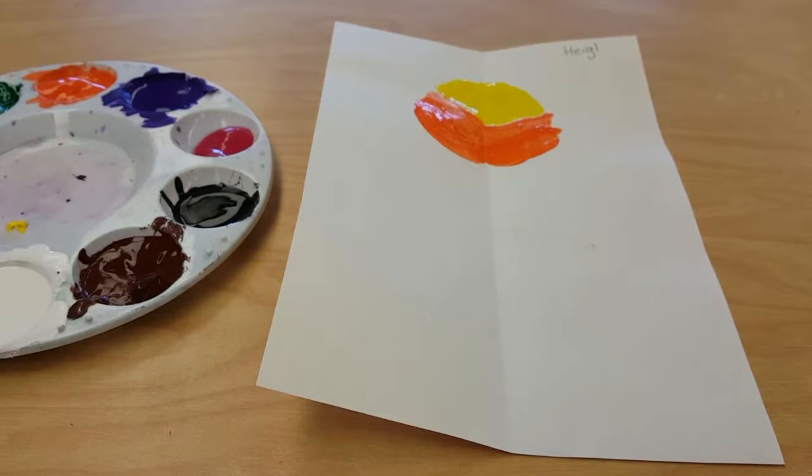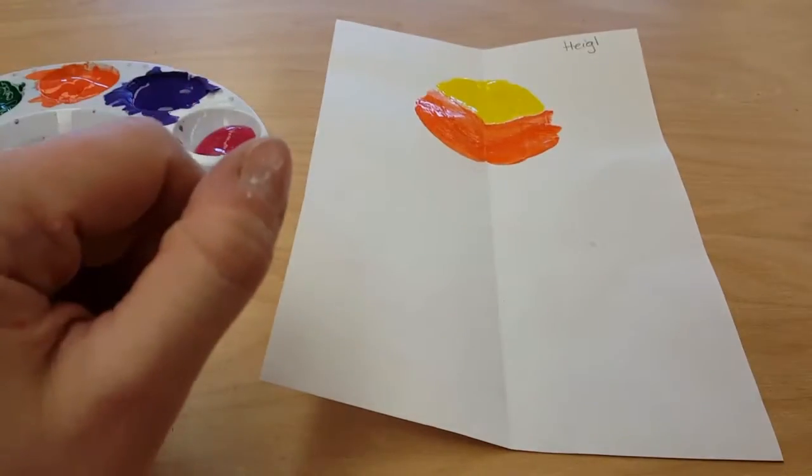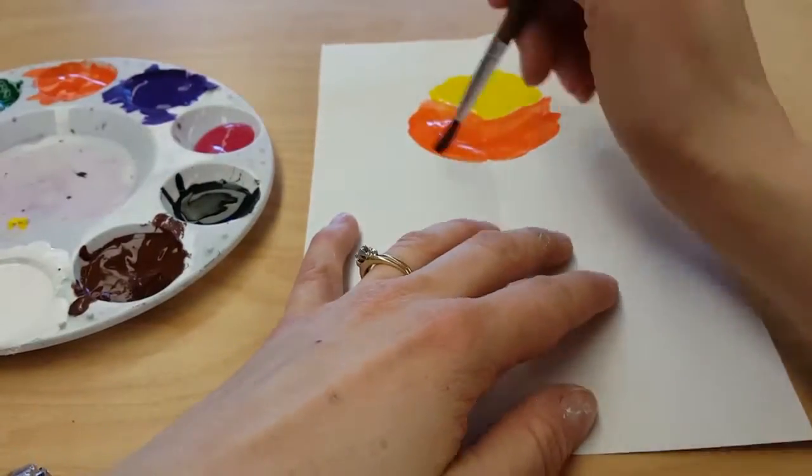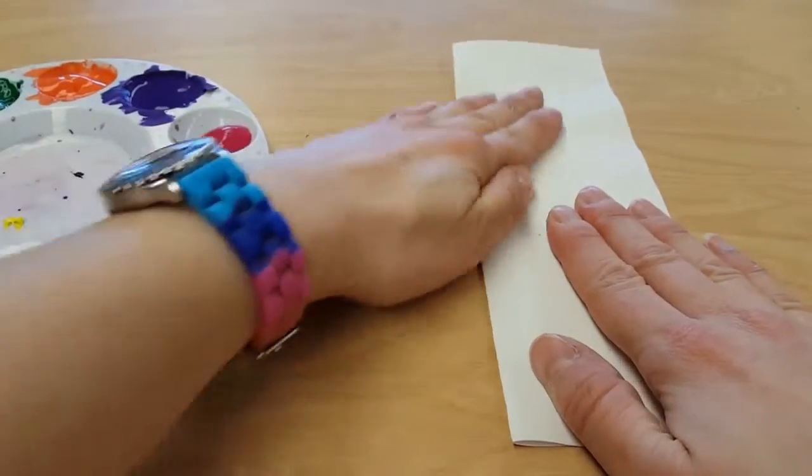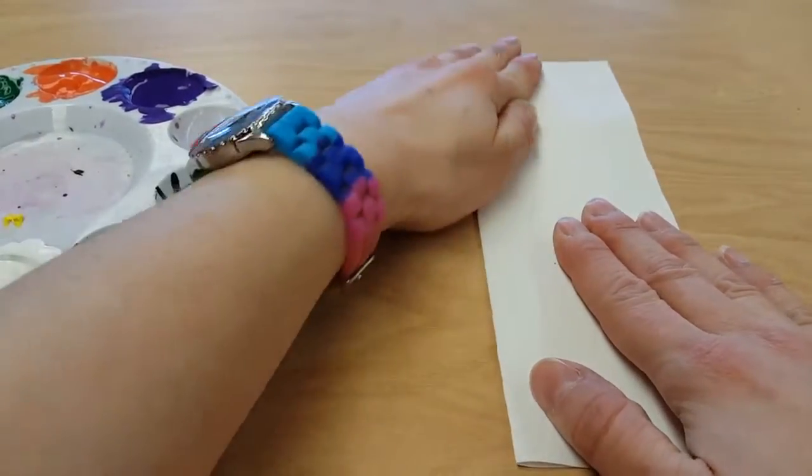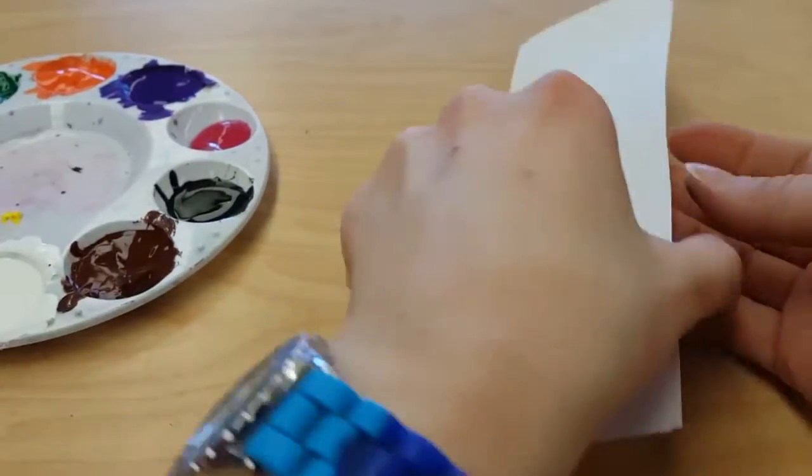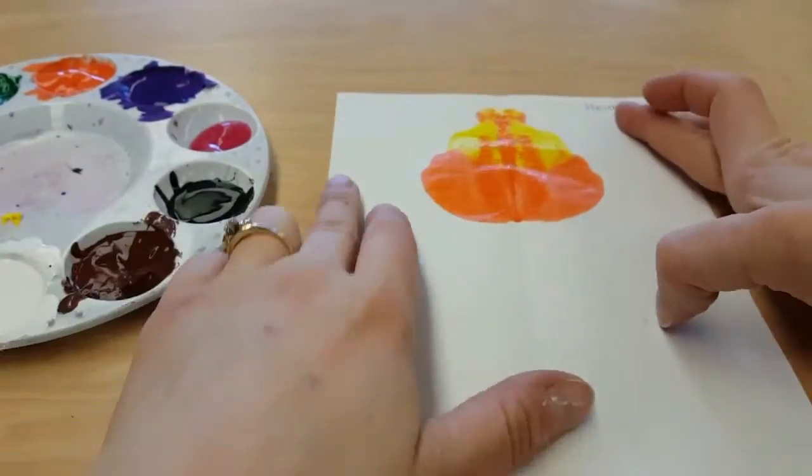Part of what we're going to do is create something called symmetry, where the left side and the right side are exactly the same. So right now we're just painting in the middle. This is probably a good place to take a pause. I'm going to fold it and rub, and then I open it—look at that! The colors kind of melted together. That's cool.